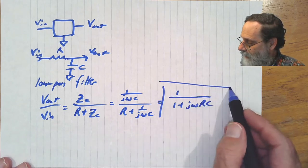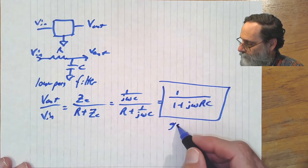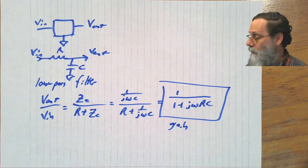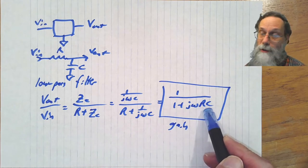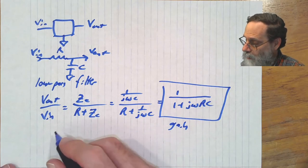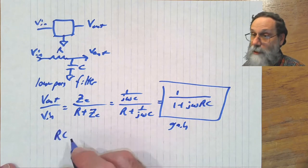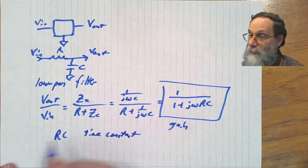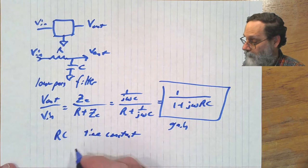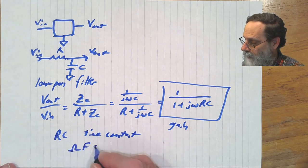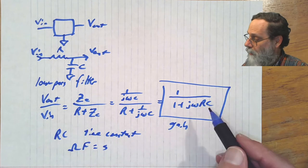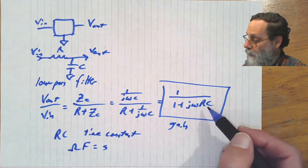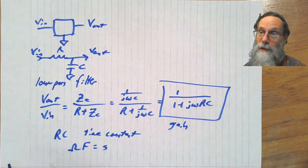That's the gain of the filter. And notice it's a function of omega. And there's also another number here, RC, and RC is a time constant. Resistance times capacitance. Ohms times farads is seconds. So the properties of this filter are determined by what this RC time constant is.